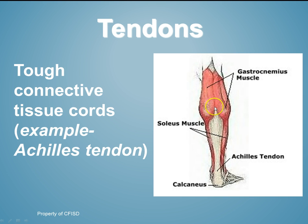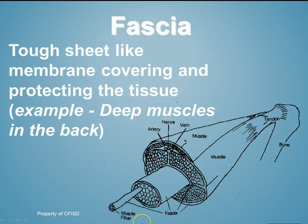Whenever your calf muscle contracts, this tendon, which does not stretch, will simply pull on the calcaneus, causing your foot to point. Next we have fascia — a tough sheet-like membrane covering and protecting the tissue. Deep muscles in the back are examples of fascia, which surrounds them to allow the muscles to move.